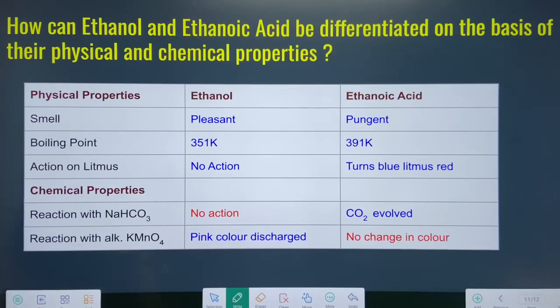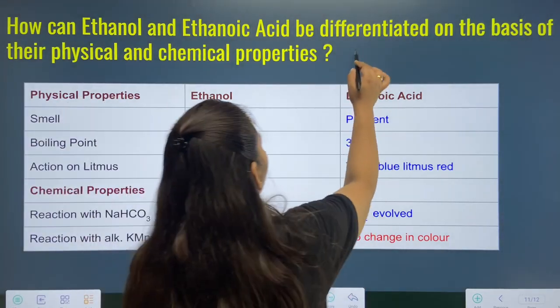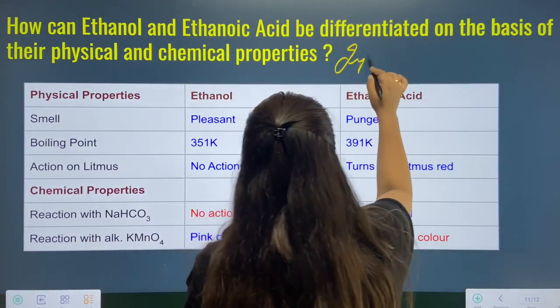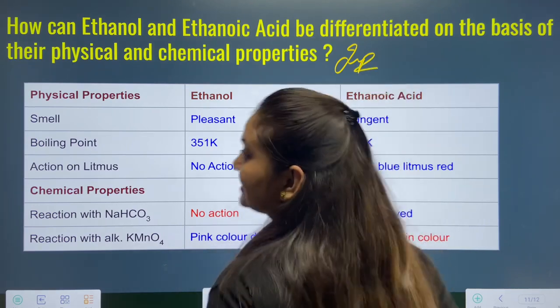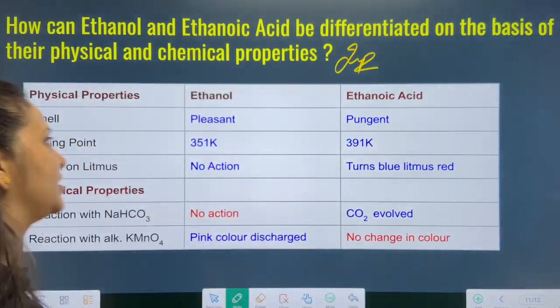This is a very important NCERT question: how can ethanol and ethanoic acid be differentiated on the basis of their physical and chemical properties? This question is very important — understand it clearly and note it in your copies.